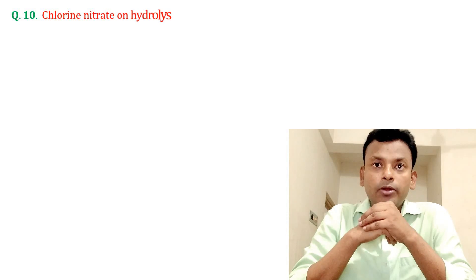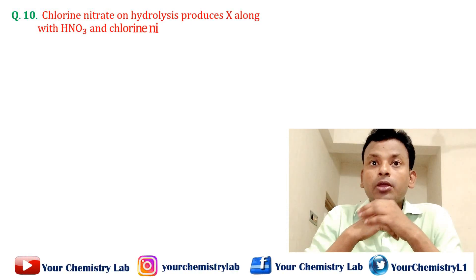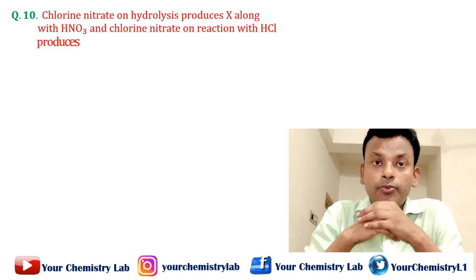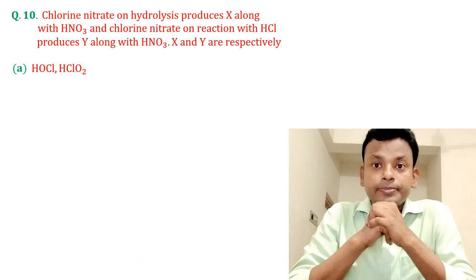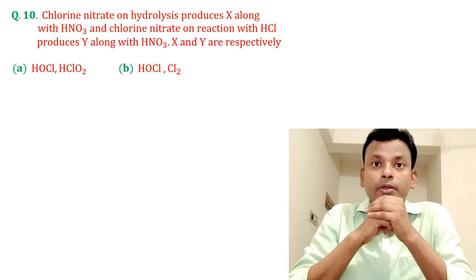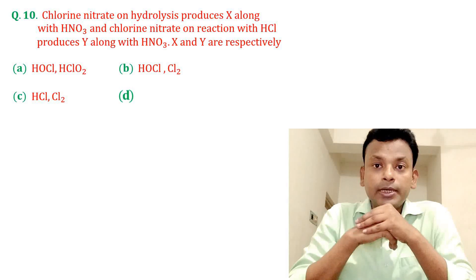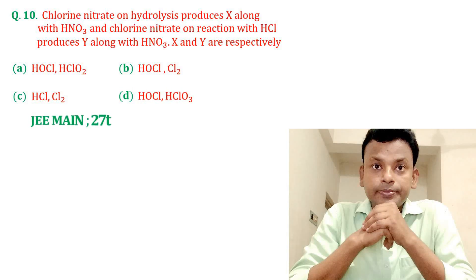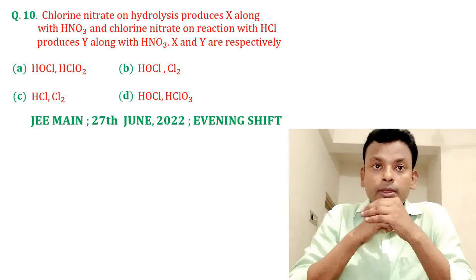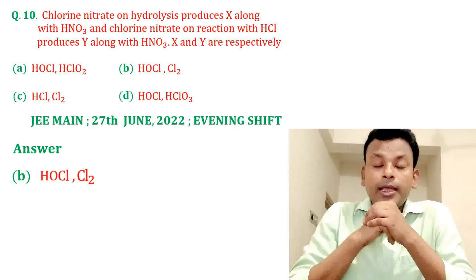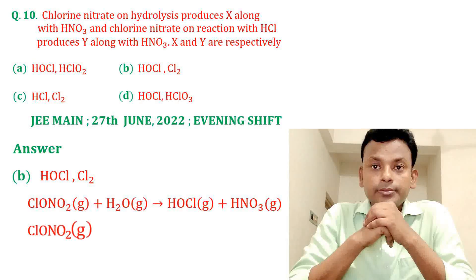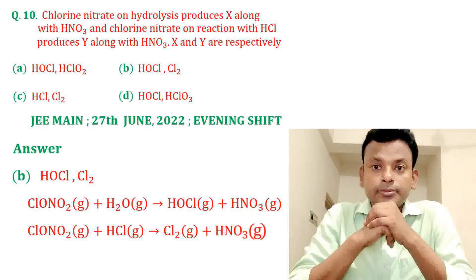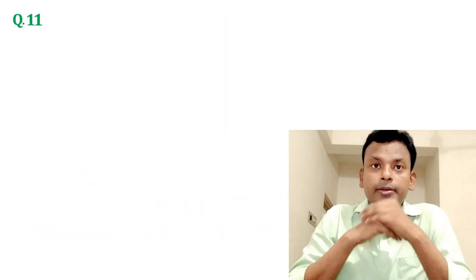Question number ten: chlorine nitrate on hydrolysis produces X along with HNO3. Chlorine nitrite on reaction with HCl produces Y along with HNO3. X and Y are respectively which options? Answer: option B is correct. X is HOCl and Y is Cl2.